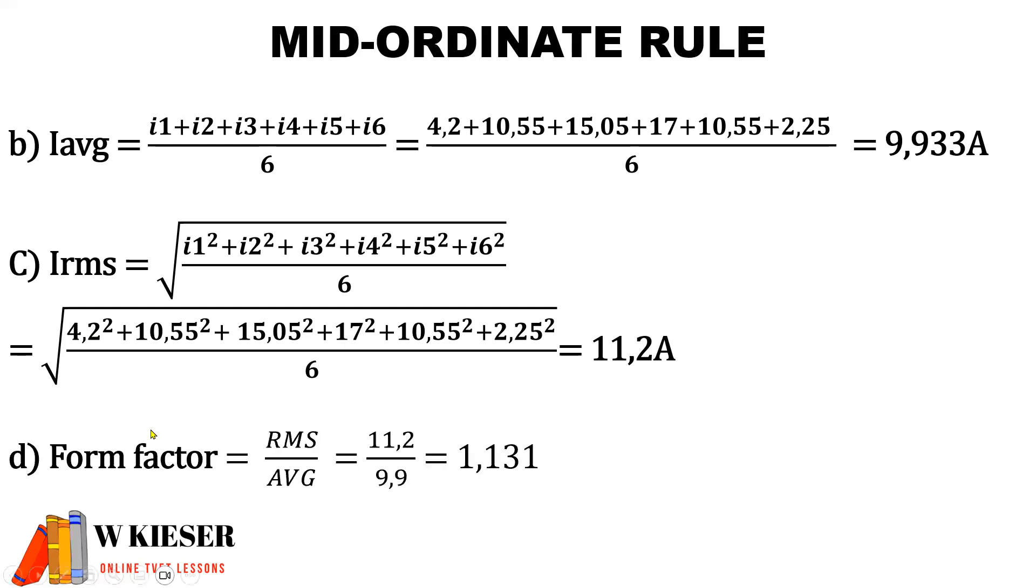To calculate the form factor, it is the ratio of the RMS to the average value. So therefore, the RMS value of 11.2 divided by 9.9 gives us the form factor of 1.131.